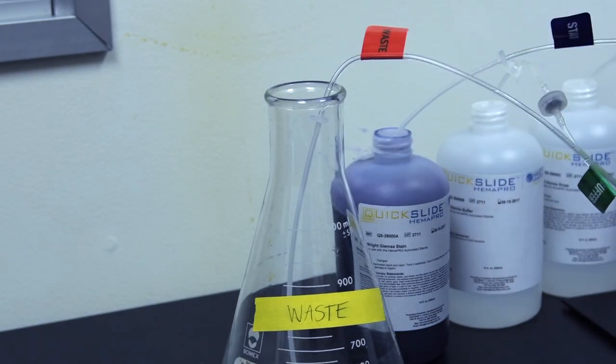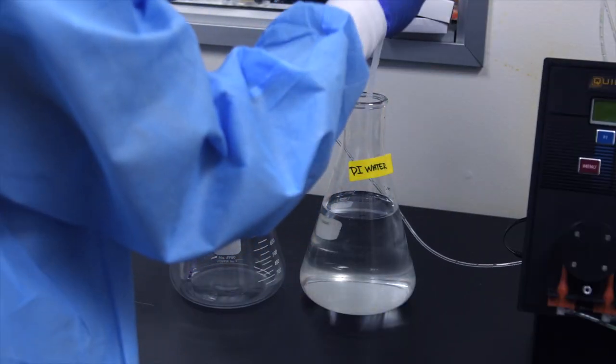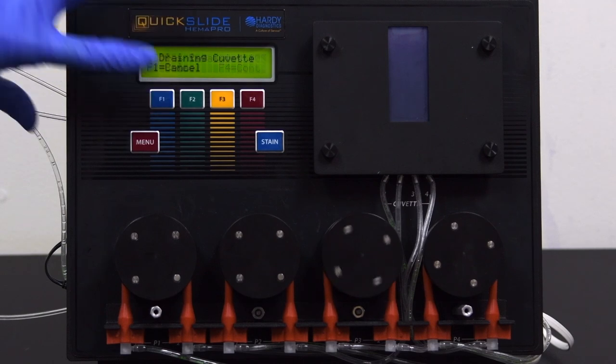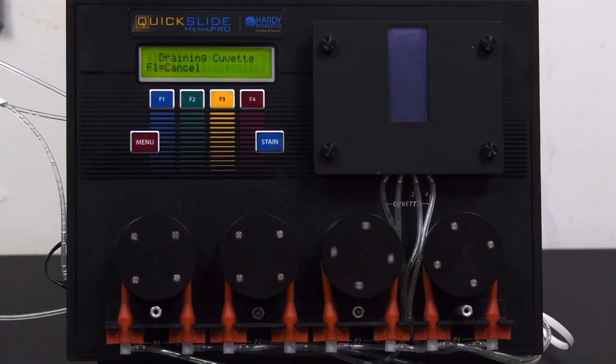Put the waste cannula into the waste container, and the reagent cannulas into DI water. Run two prime cycles to confirm that the tubing and cannula lines are correctly installed.